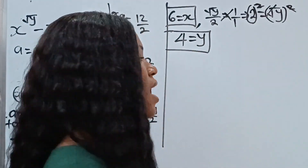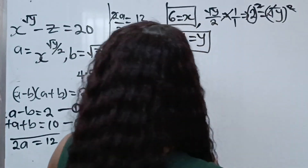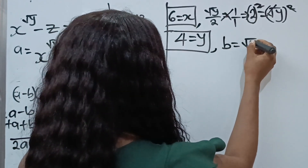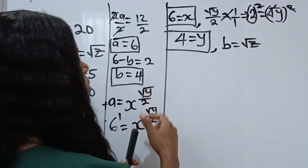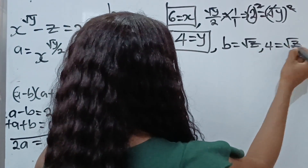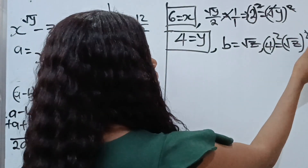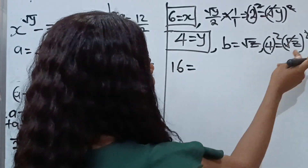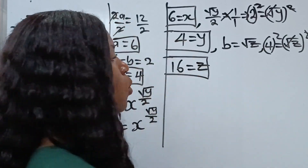It's remaining z. Recall that b equals square root of z. Our b is 4, so 4 equals square root of z. Squaring both sides: 4 squared equals 16, which equals z. So our z is equal to 16.